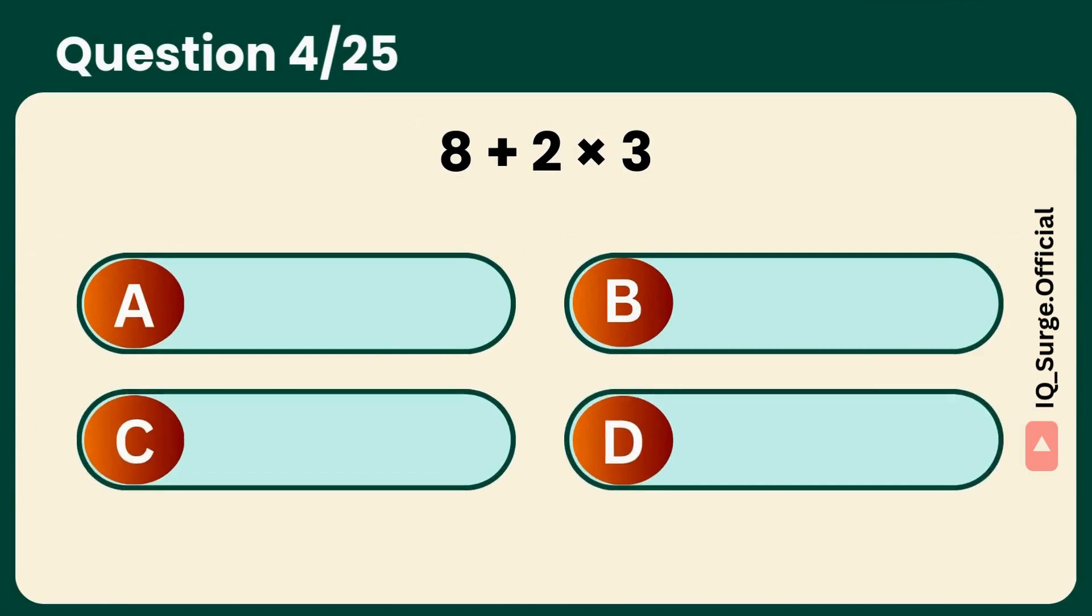What is 8 plus 2 times 3? Answer: 14. Automatic confidence.